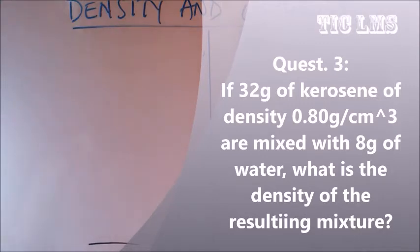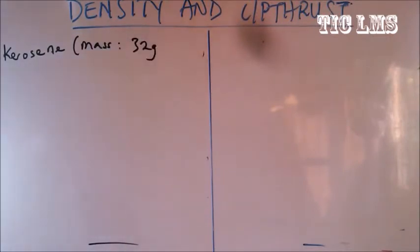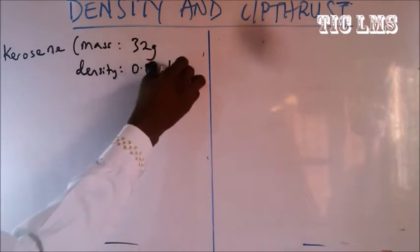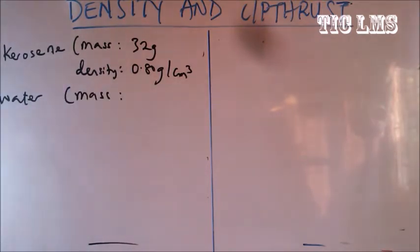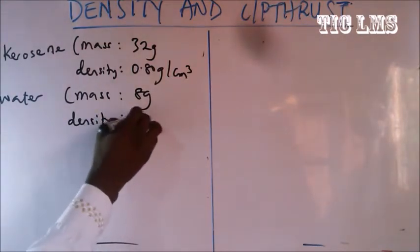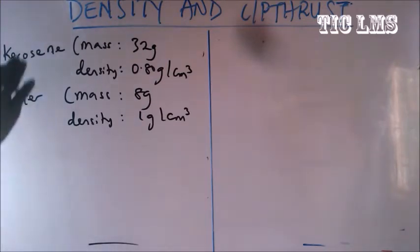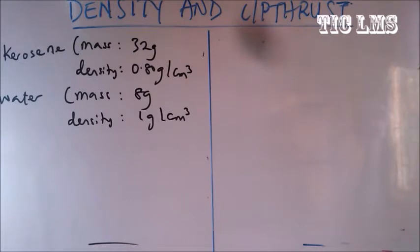The next question says: if 32 grams of kerosene of density 0.80 g/cm cubed are mixed with 8 grams of water, what is the density of the resulting mixture? We have kerosene with mass 32 g and density 0.80 g/cm cubed, mixed with water of mass 8 g and density 1 g/cm cubed. We need to find the density of the mixture by adding masses and volumes separately.